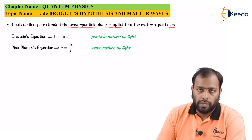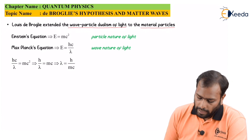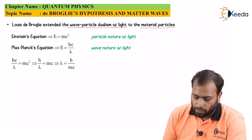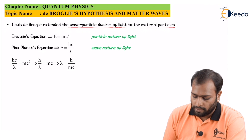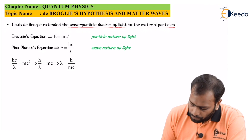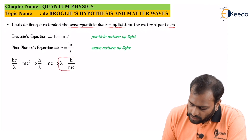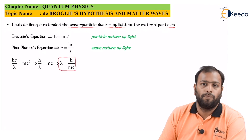De Broglie equated both equations and finally got: hc/λ = mc², which gives h/λ = mc, and finally λ = h/mc. This is the equation for the wavelength of light in this case.